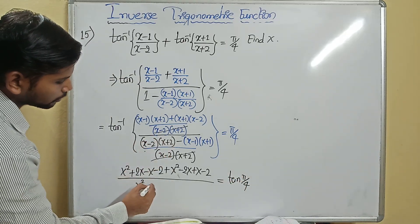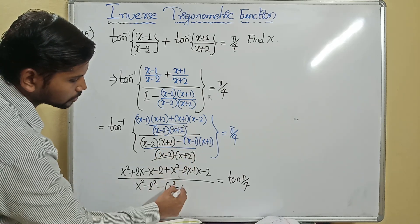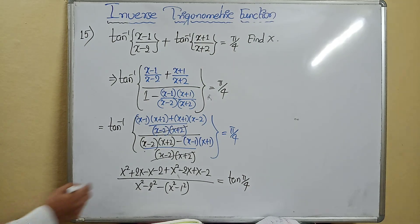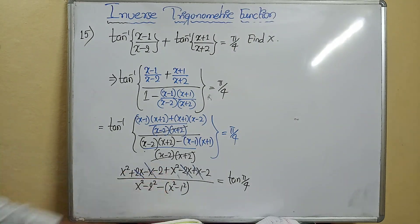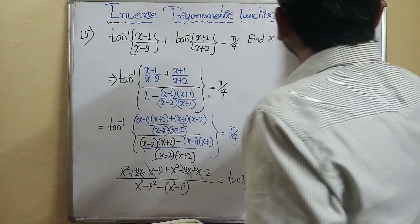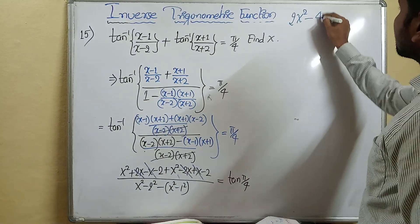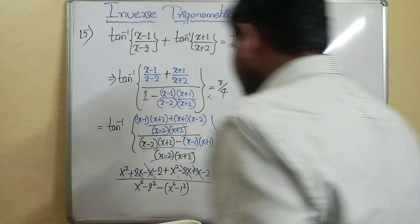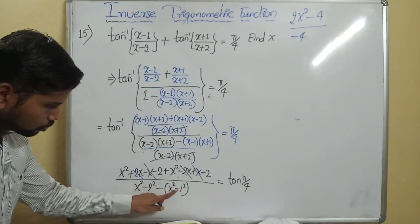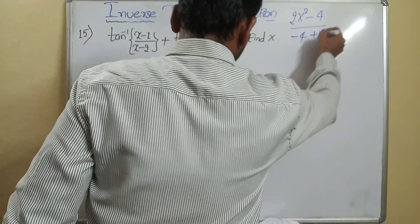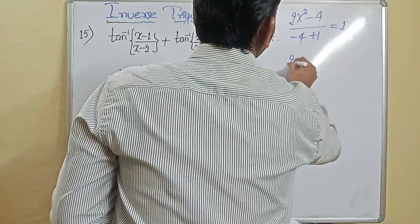Using (a−b)(a+b) = a²−b², the denominator becomes x²−4 minus x²+1 = −3. The numerator simplifies to 2x²−4. So tan inverse of (2x²−4)/(−3) equals pi/4. Since tan(pi/4) = 1, we get (2x²−4)/(−3) = 1.